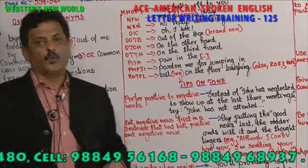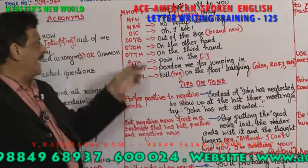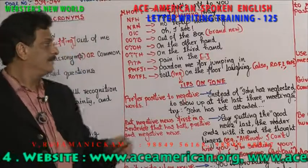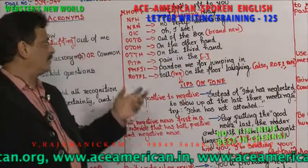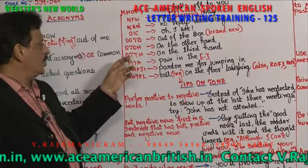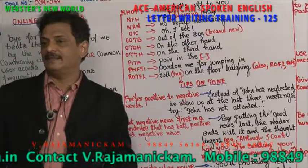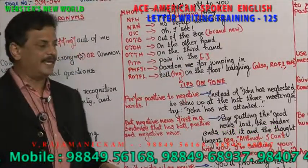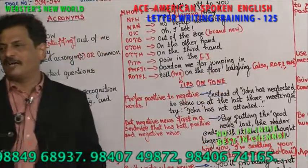NFW means 'no bleeping way' — no chance at all. NRN means 'no reply necessary' — no need to reply. OIC means 'oh, I see' — you are just exclaiming. OOTB means 'out of the box' — brand new. OTOH means 'on the other hand.' OTTH means 'on the third hand.' PITA means 'pain in the arse' — being so problematic. PMFJI means 'pardon me for jumping in.' ROTFL means 'rolling on the floor laughing' — a very heavy joke.